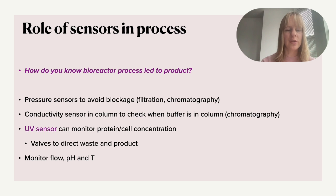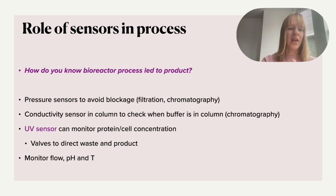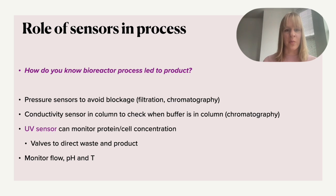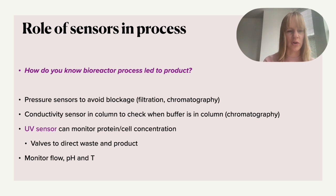Conductivity sensors are often used because as soon as your buffer comes through, you can check where the material is — when it's in the column and when it's come through. At the end of the column, you'd want a UV sensor to monitor proteins and cells, and then you can split it up: a valve going towards waste if there's nothing in there, or a valve to collect when your product is present. This is similar to using TLC strips in lab chromatography, just checking whether the section contains your product.